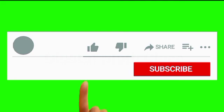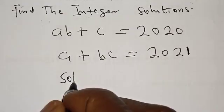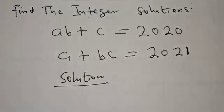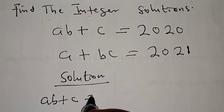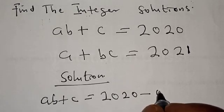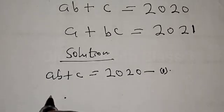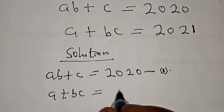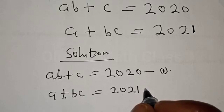But before I proceed, please don't forget to like, share, comment and subscribe. Thank you. Solution. We have AB plus C equal to 2020 — let's call this equation 1. Then we have A plus BC equal to 2021 — let's call this equation 2.